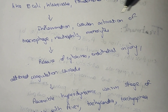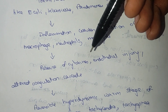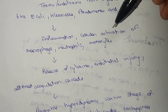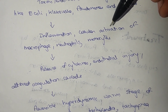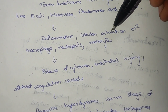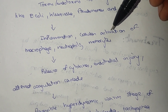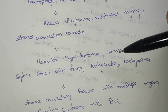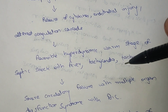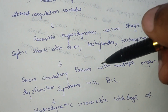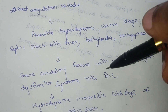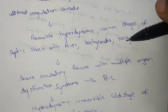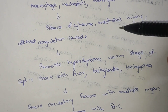Cytokine release leads to endothelial injury and altered coagulation cascade. This results in a reversible hyperdynamic warm stage of septic shock presenting with fever, tachycardia, and tachypnea, or a severe circulatory failure with multiple organ dysfunction syndrome and DIC — Disseminated Intravascular Coagulation.